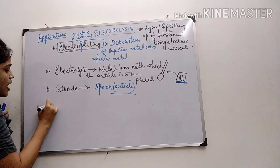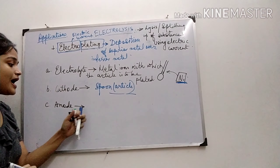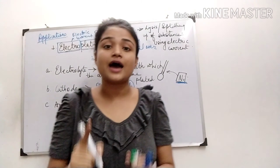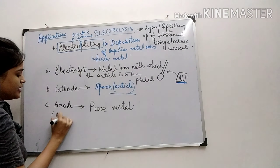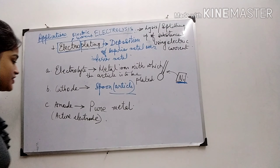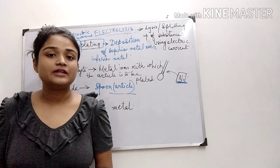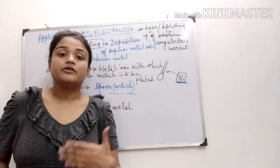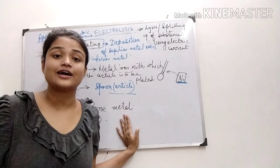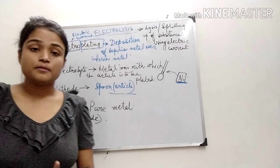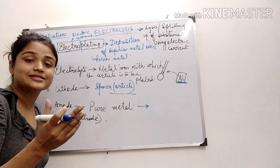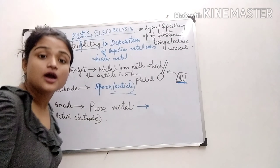The third requirement is the anode. The anode should contain the pure metal — it must be an active electrode. If it is an inert electrode, the nickel ions will be depleted after some time and no nickel ions will be replenished in the solution. So if the anode is made up of the same metal with which we want to electroplate, then the metal at the anode will be converted into ions, replenishing the solution.